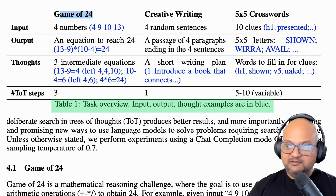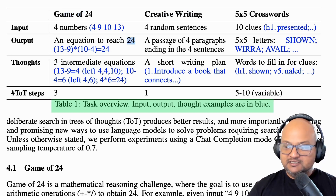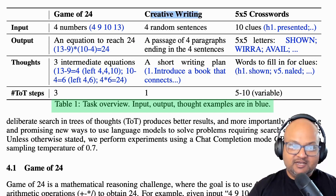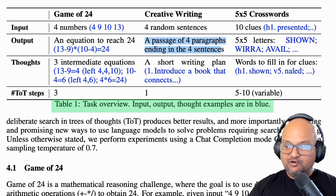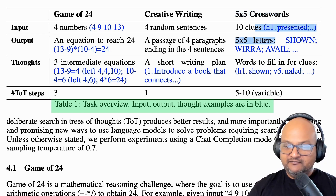They have three examples of concrete problems on which they've used this tree of thought prompting. The first one is Game of 24, a mathematical game with the goal of reaching 24 using addition, subtraction, multiplication, and division on any four numbers. The other two examples are more interesting because they're more focused on language modeling. The first is creative writing, where given four sentences as input you want a passage of four paragraphs each ending in one of those sentences. Another is crosswords — five by five crosswords with the usual horizontal and vertical clues for words.